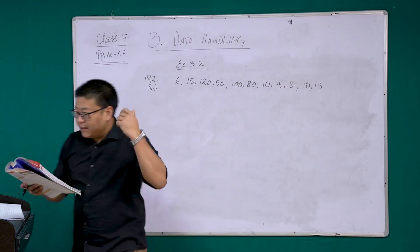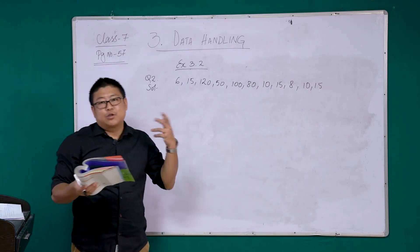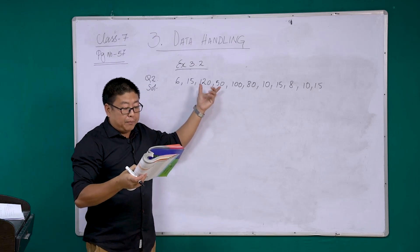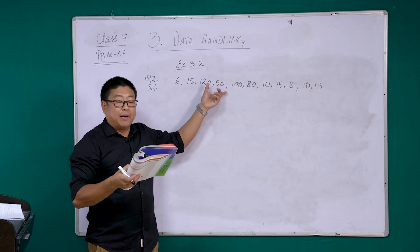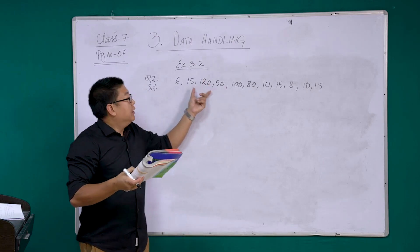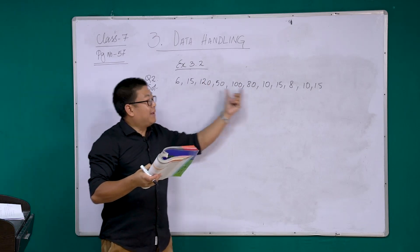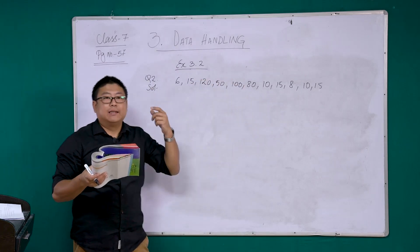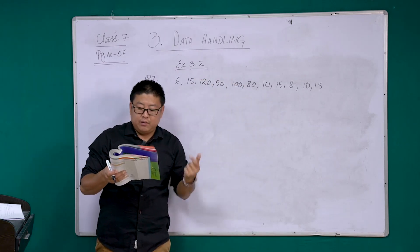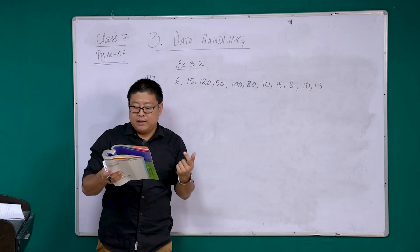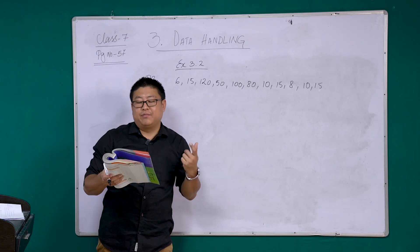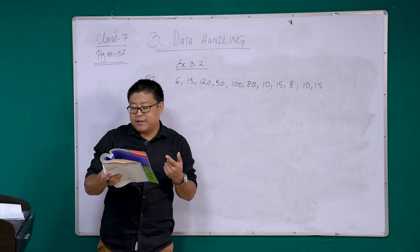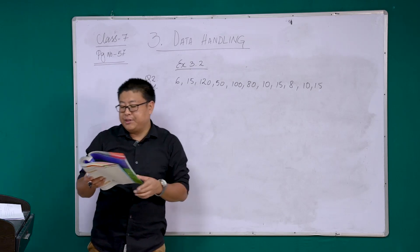These are the runs scored by 11 players, so we have 11 scores here. We are going to find the mean, mode, and median of this data, and they are asking whether the three are the same.